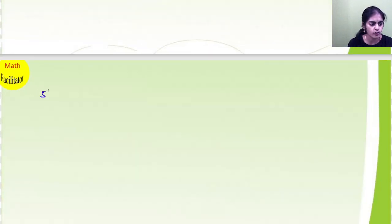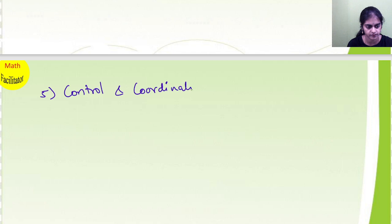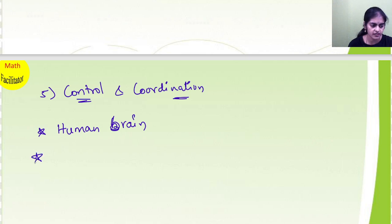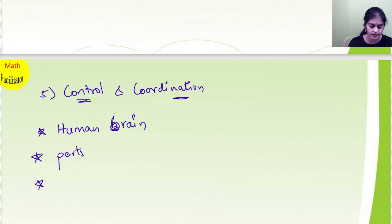Moving on to the next chapter: Control and Coordination. In this particular chapter, let me give you the essay questions first. Learn all the tables, and apart from the tables, please learn the structure of the human brain and describe the working — the parts and the working of the human brain, and the various parts of the human brain. Learn the parts, the structure, and describe it.